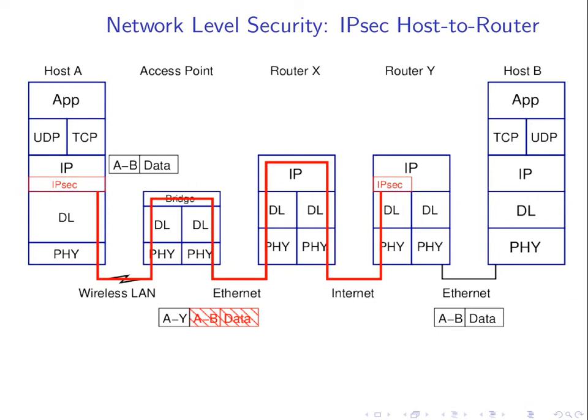This process of putting one IP datagram inside another is called tunneling. An A-to-B datagram with data — where the header contains source and destination IP addresses — is placed inside another datagram where the data is the original packet encrypted and the outer header says it's from A to Y. Normally, when creating a packet, we put higher-layer data into lower-layer protocols — HTTP inside TCP, TCP inside IP. Tunneling puts a network layer IP packet inside another network layer IP packet, and it's commonly used for security purposes.